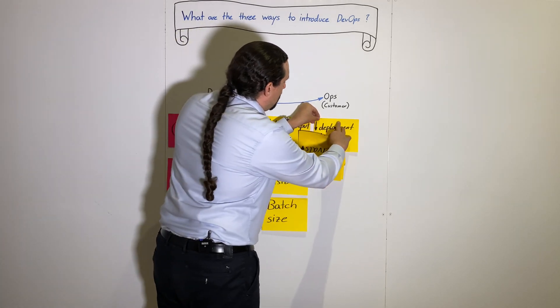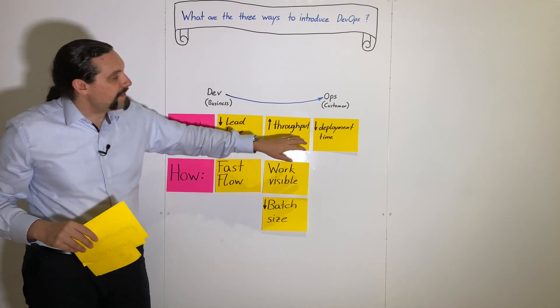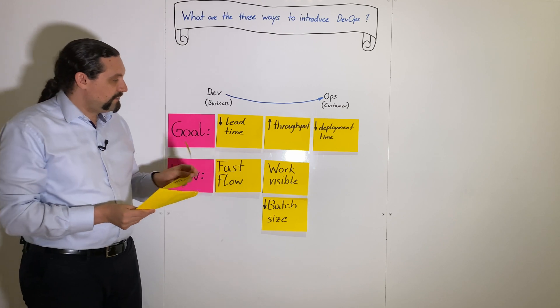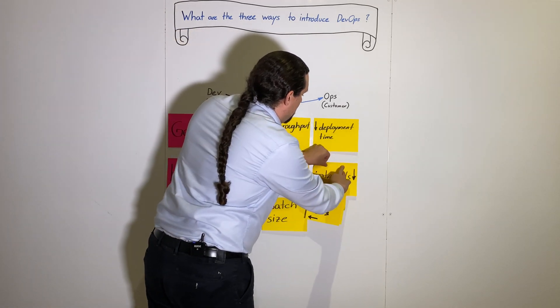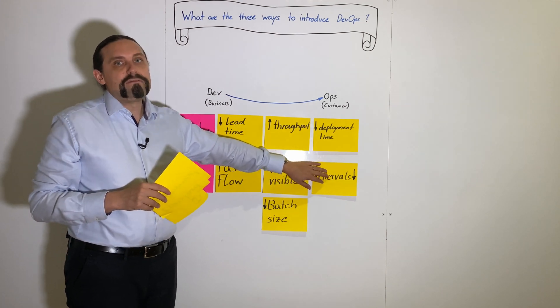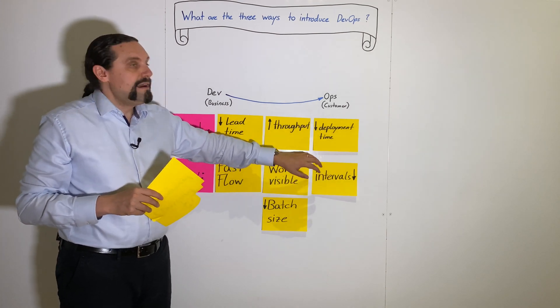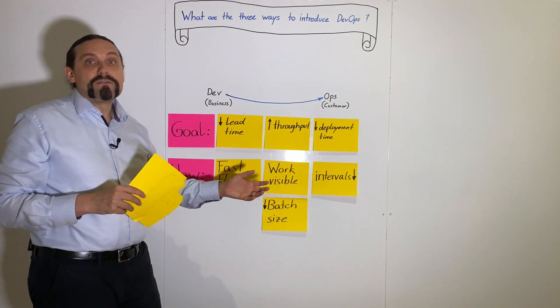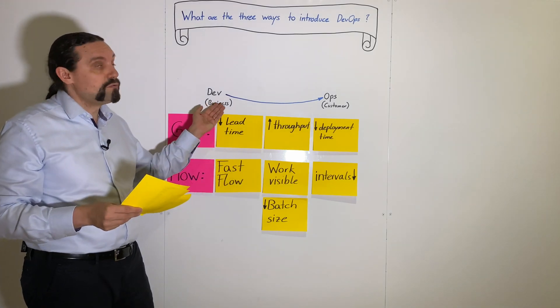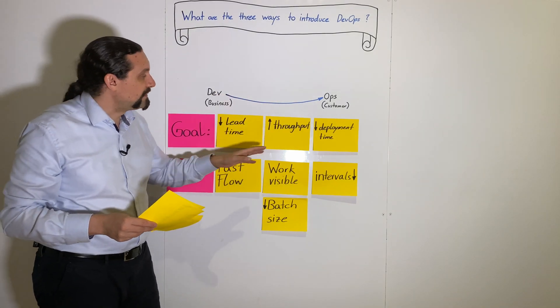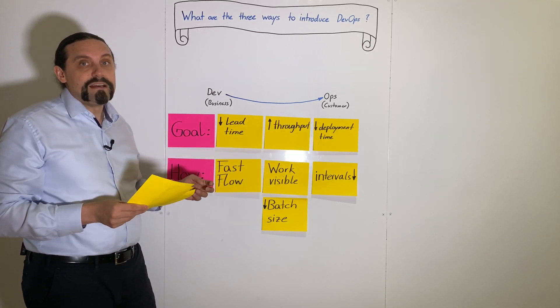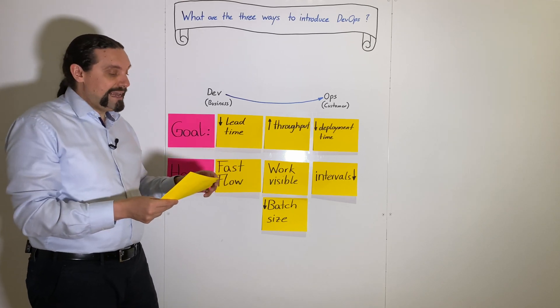The third goal is to reduce the deployment time. We do that by reducing the intervals. Instead of having every half year or every three months a release, we are going to release every month, or every two weeks, or even when code is committed. And for that we need to automate our continuous integration and continuous deployment pipeline.